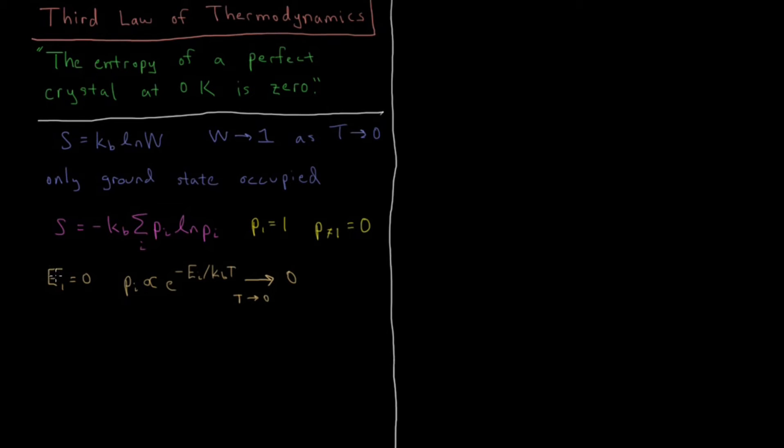Now for the ground state you are going to have a zero on the numerator, and so e to the minus zero is going to be one, and all the probability is going to be located in just that ground state which we have defined to be an energy of zero. So this Boltzmann factor here is what governs the fact that the probabilities for all these other states become zero, because there is no energy to promote anything to any excited states beyond just this lowest energy state possible.